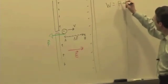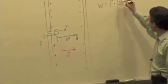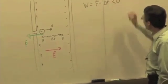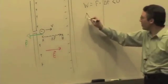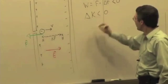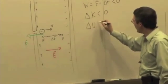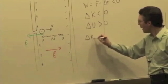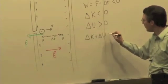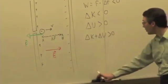The work, F dot delta R, is going to be negative, right? Less than zero, and so the change in kinetic energy is less than zero. Change in potential energy is greater than zero because it's the opposite of that. So we end up, again, with delta K plus delta U is greater than zero, or excuse me, equal to zero.